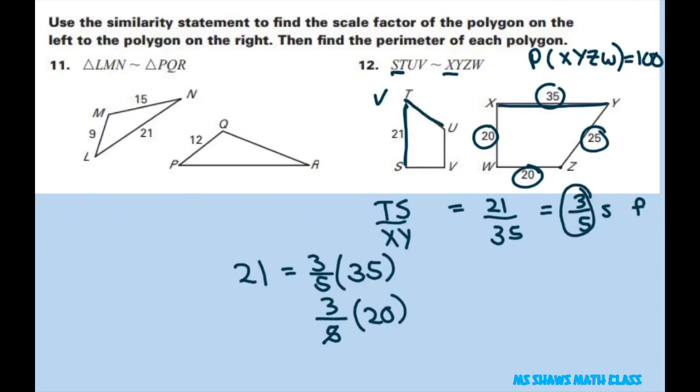And five goes into 20 four times. Four times three is 12. And the 20 is your YZ or WZ. So WZ is right here. So that goes with your UV. So that's going to be 12.